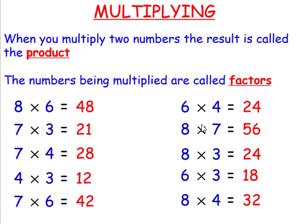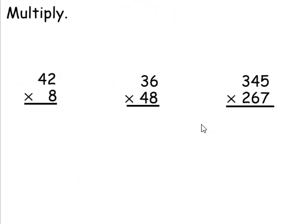Let's now multiply multi-digits. In the first one, we have a two-digit number multiplied by a one-digit number. We're going to start with 8 times 2, which is 16. We're going to go 8 times 4, which is 32. We'll add the one since we carried it over, and that's going to leave us with 336.